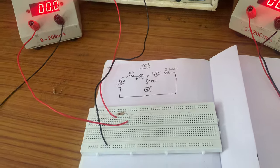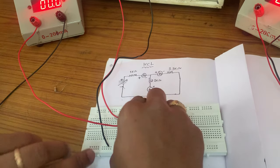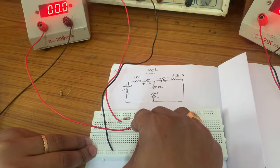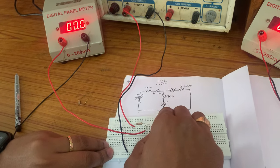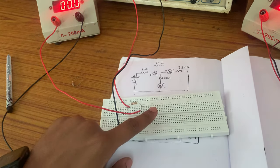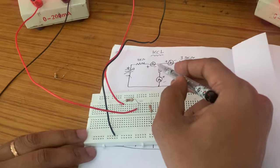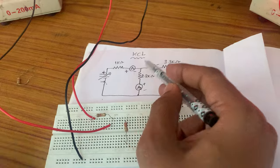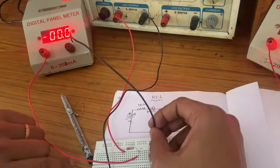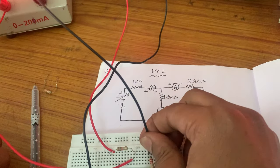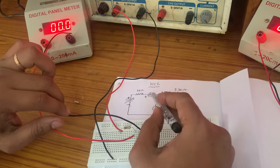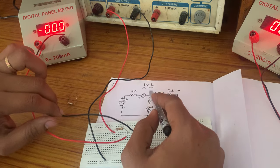Now I am connecting the 2.2 kΩ resistor. This is the 2.2 kΩ resistor. The ammeter 1 negative is connected to the 2.2 kΩ first terminal.